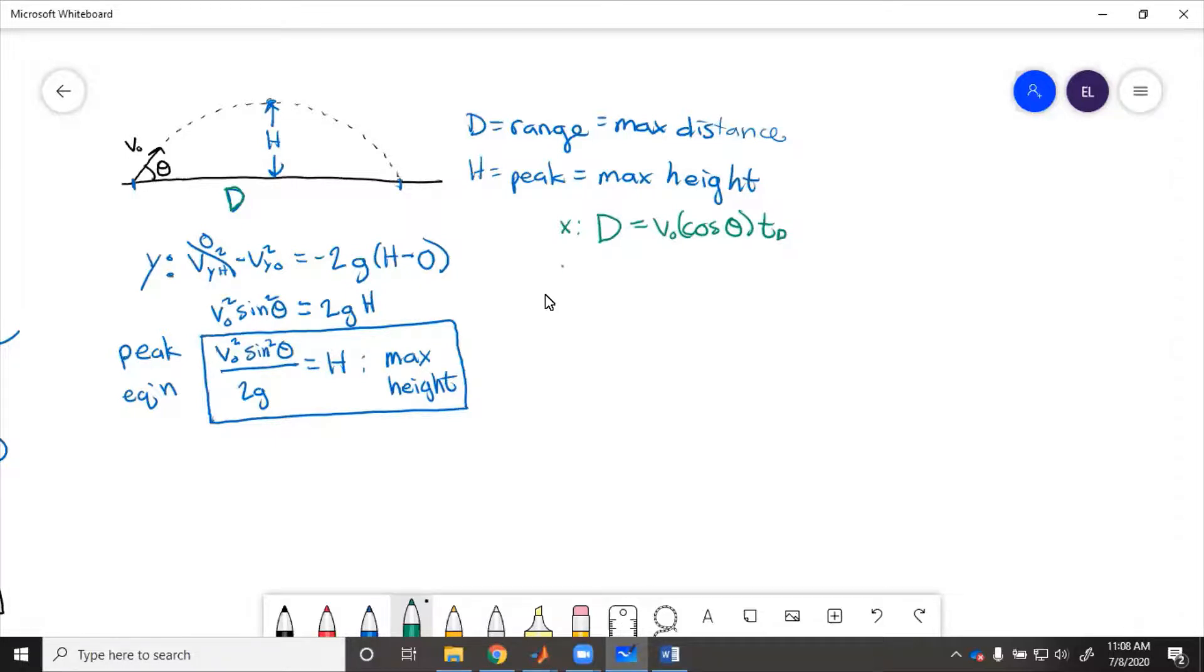And then in the y, we know that the height at the end is 0. So we will have 0 equals V initial sine theta times T minus 1 half G T squared. So in here, we need to get D. But in order to get D, we have to know T. So we solve for T from the y equation, plug it in and find D in terms of V initial and theta and G.